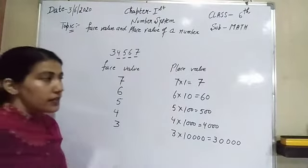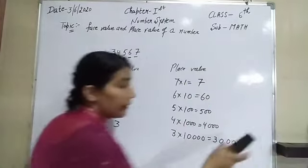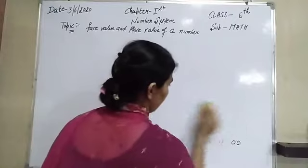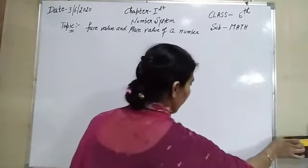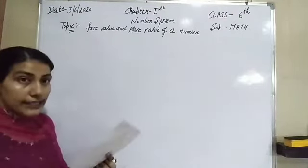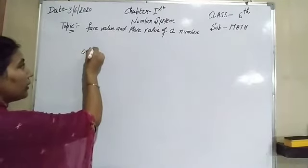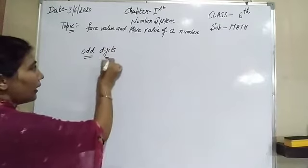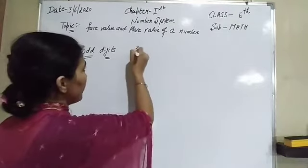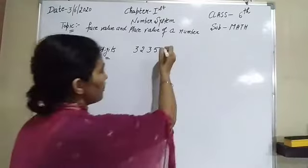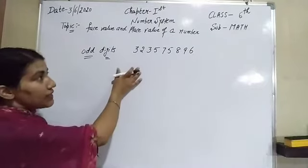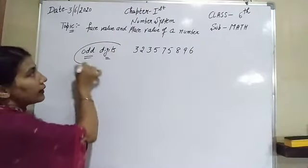Let us take one more example. In your worksheet, the question is: write the face value and place value of each odd digit in the number 3235757589 6. We have to write the face value and place value of only the odd digits.